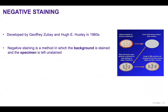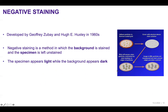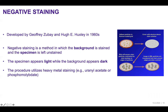One of the methods widely used to increase the contrast for a biological sample is negative staining. Introduced in the 1960s, it utilizes a method where the background is stained whereas your sample or particles of interest are not stained. In this case, the background appears dark whereas your objects or particles of interest appear light. This process uses heavy metal staining agents such as uranyl acetate, phosphomolybdate, or uranyl formate.